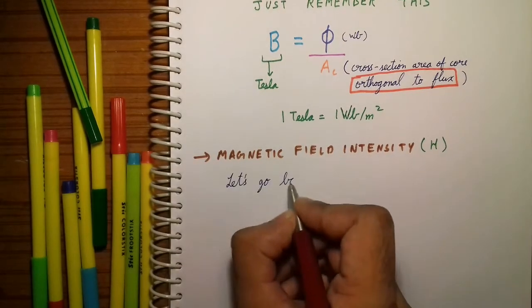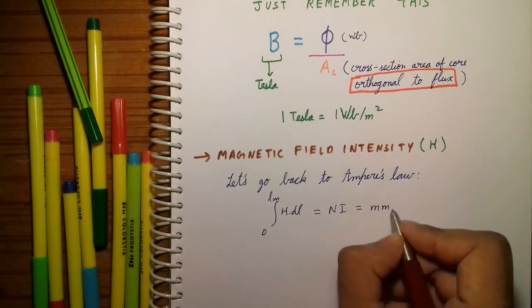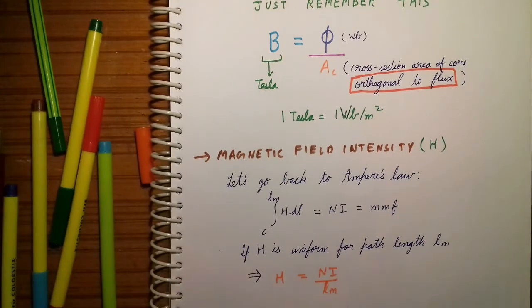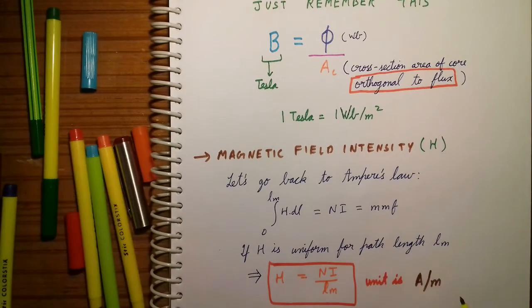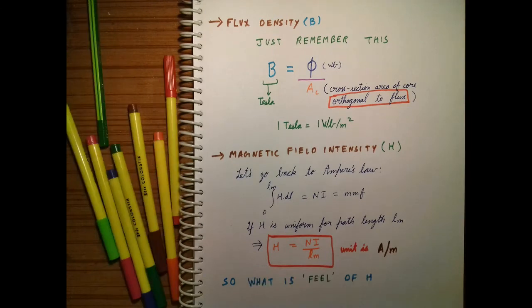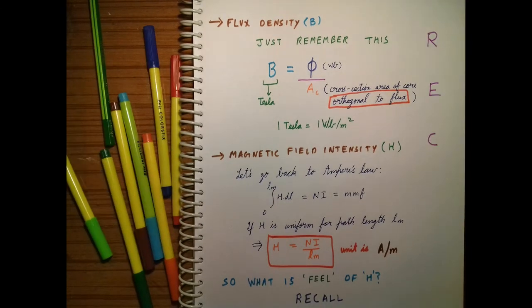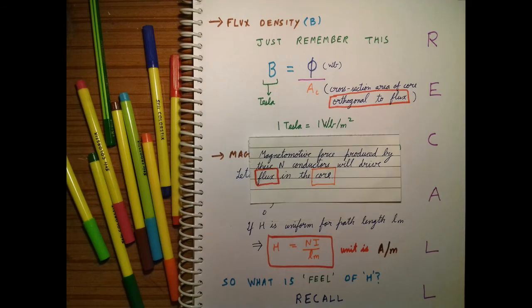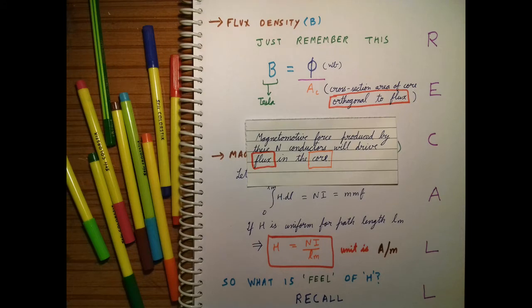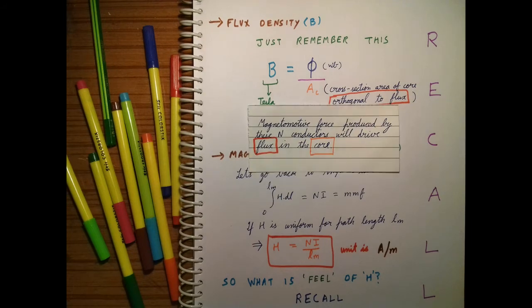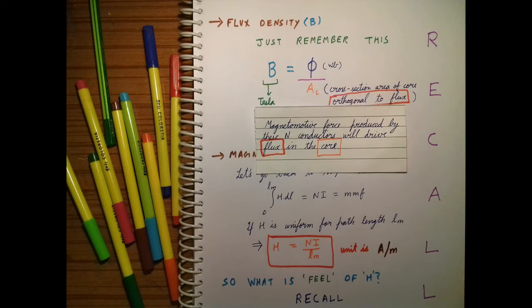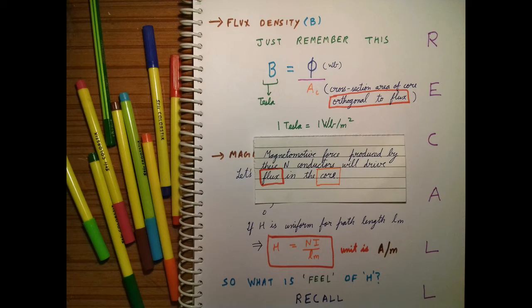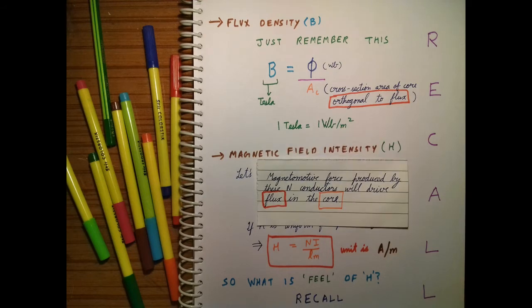Now let us understand what is magnetic field intensity H. Going back to Ampere's law: the integration of H over the magnetic path length gives MMF. If H is uniform for a path length LM, then H is equal to Ni divided by LM, and its unit is Ampere per meter. From this expression, Ni is MMF, so H is just a measure of MMF. Since MMF moves flux in the core, we can conclude that H gives birth to B, and B is flux density.